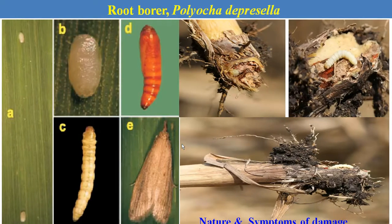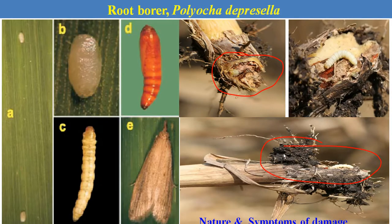The next and last borer is the root borer. The name indicates that this borer attacks the root portion from the soil of the sugarcane stem. The caterpillar enters the stem from the roots and feeds inside the stem, producing dead hearts. However, the dead hearts produced by the root borer cannot be easily pulled out, unlike those of the early shoot borer.